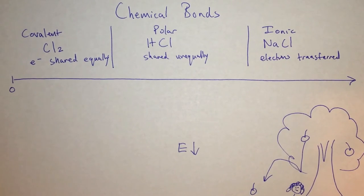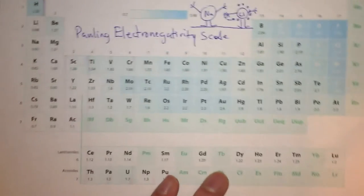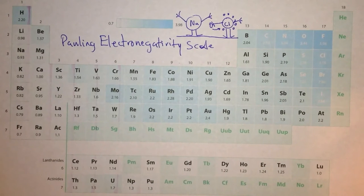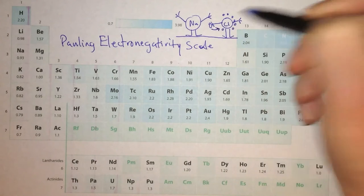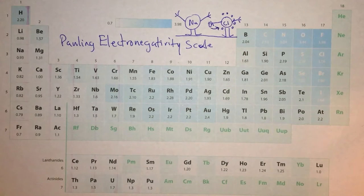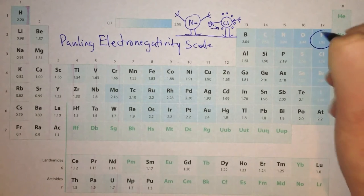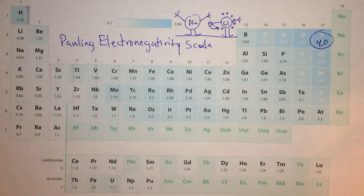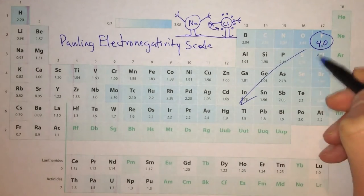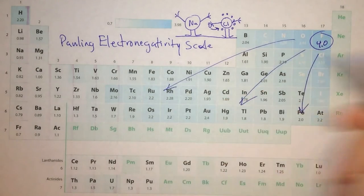We categorize these compounds by their electronegativity. Electronegativity is an arbitrary measure of how much an atom pulls on another atom's electrons in a bond. The Pauling scale is one of them. Somebody a long time ago decided that fluorine should have a value of about 4.0, and all the other values were determined based on comparing them with fluorine.